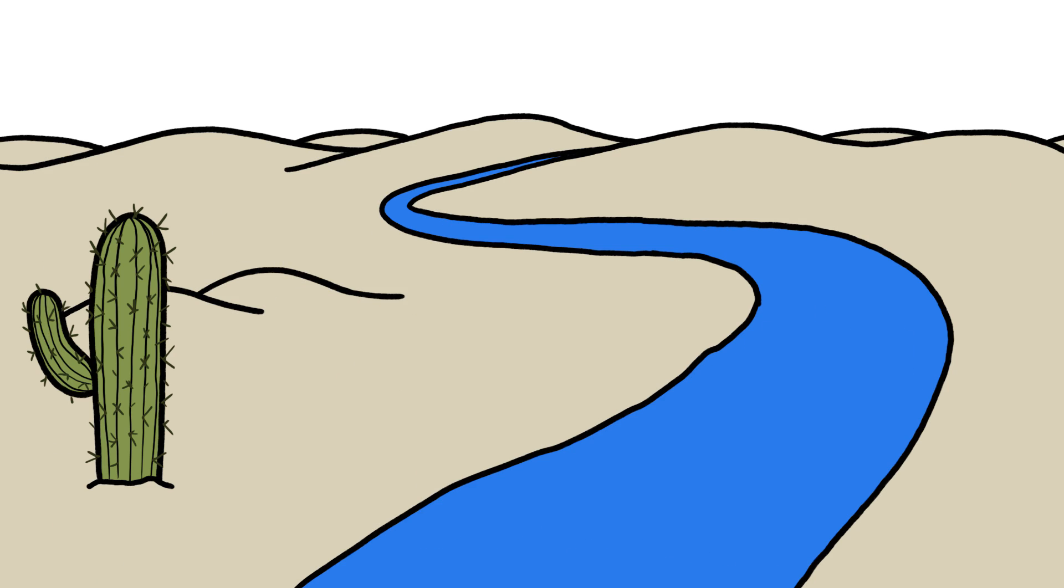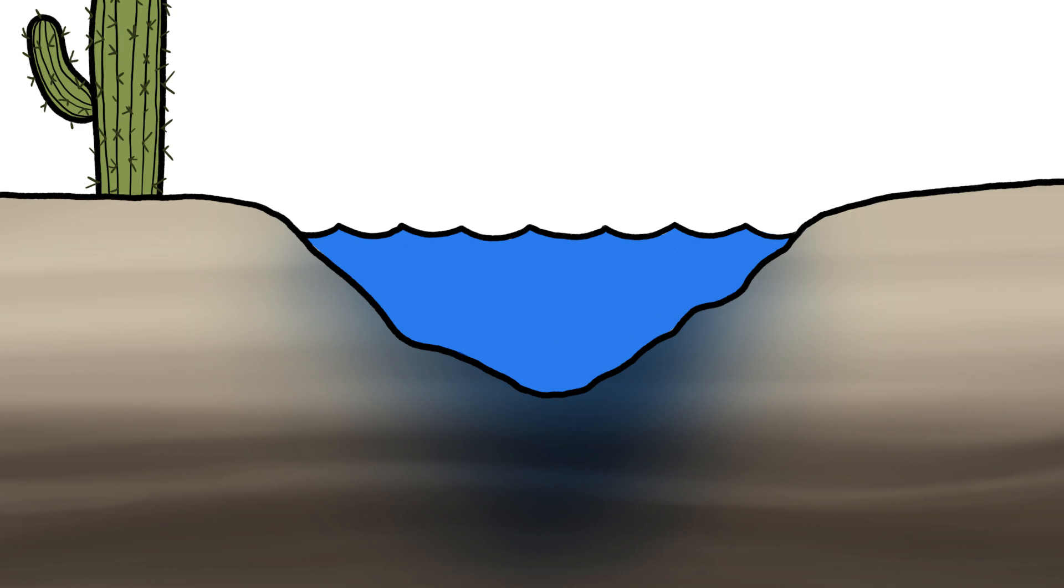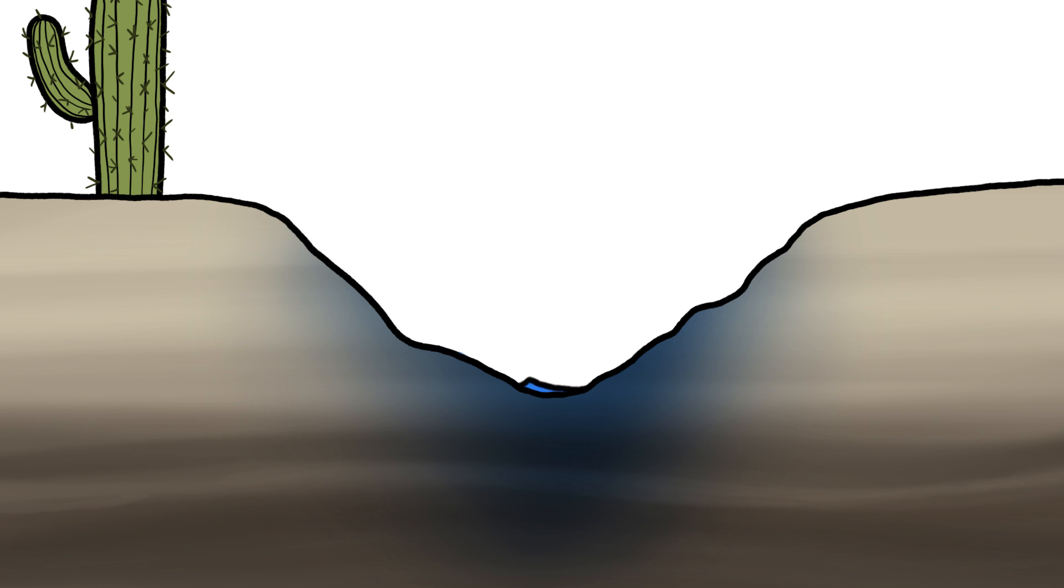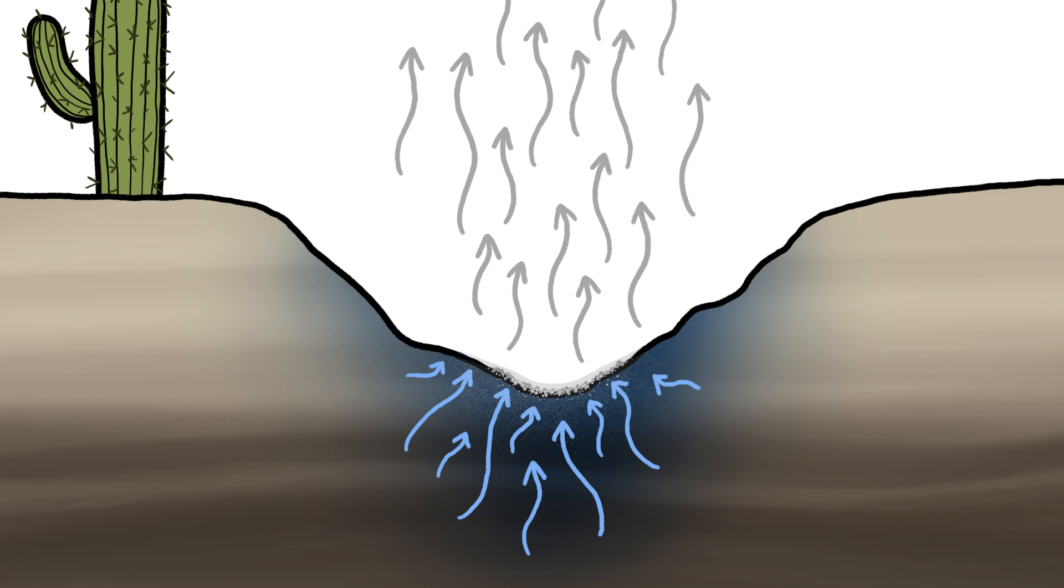For instance, say you've got a stream running through a desert. Sometimes there's so little rain that the stream dries up. As it does, some ground water is actually drawn upward by capillary action, and as it rises and evaporates, dissolved minerals in it are left behind and precipitate out, coating the sediments in the riverbed and cementing them together.